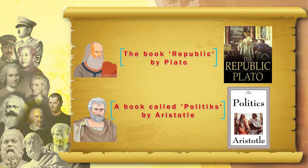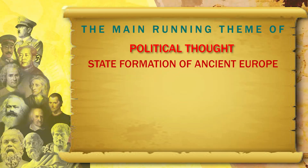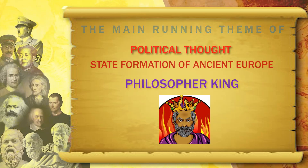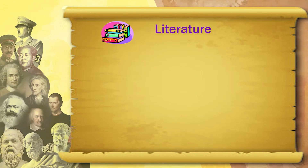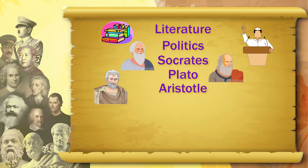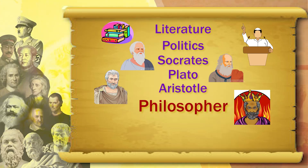Both Aristotle and Plato play a very big role, and the main running theme of this political thought and state formation of ancient Europe is the concept of the Philosopher King. It is mentioned again and again in the literature, in Politics and in Republic, by Socrates, by Plato, by Aristotle — that a king has to be a philosopher, or the philosopher should have kingly duties.